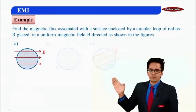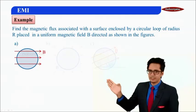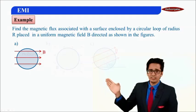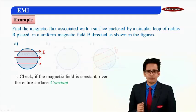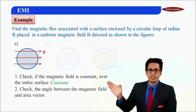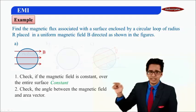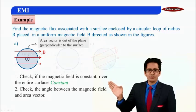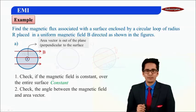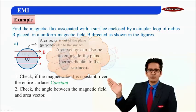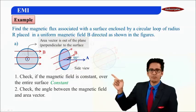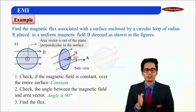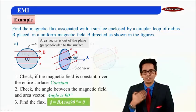Let us take another situation. Here the area vector is inside or outside the plane — let us take the area vector out of the plane. B is constant over the surface. The angle between B and A is 90°. So flux = BA cos 90° = 0.